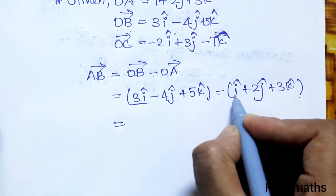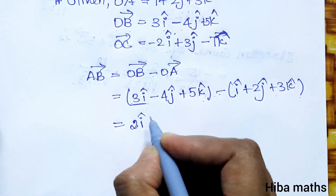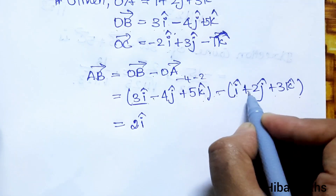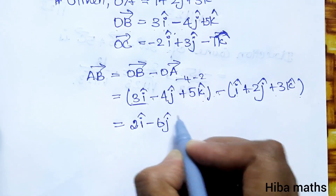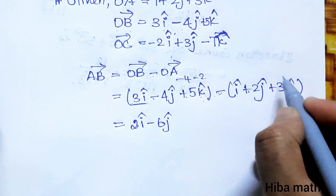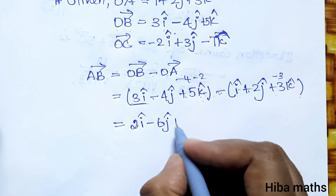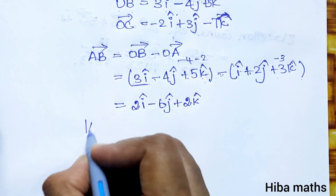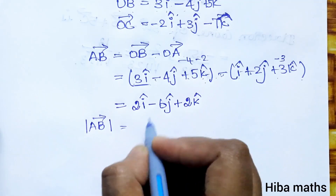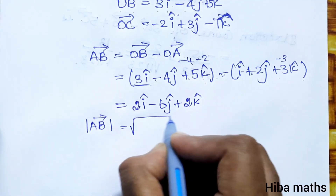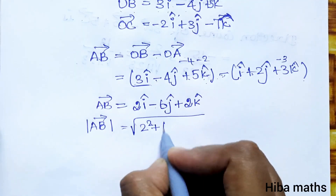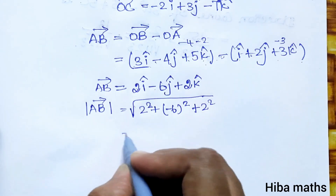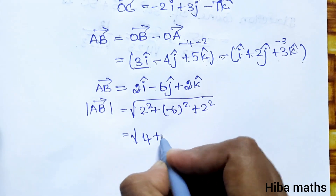AB vector equals OB minus OA. That gives us 3i minus i = 2i, minus 4j minus 2j = minus 6j, and 5k minus 3k = 2k. So AB vector is 2i minus 6j plus 2k.